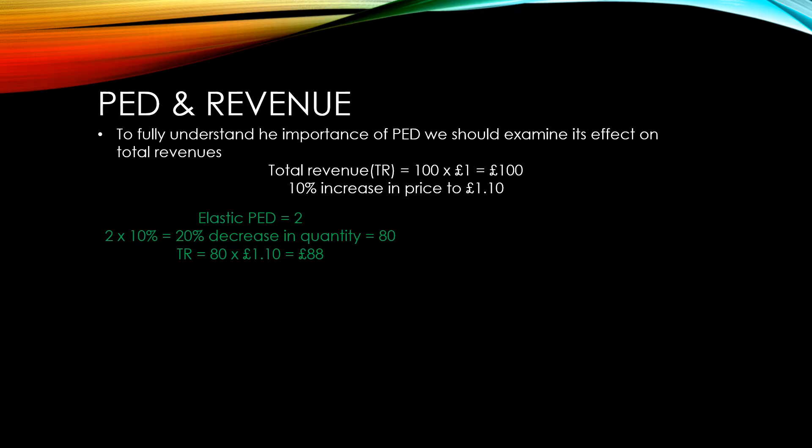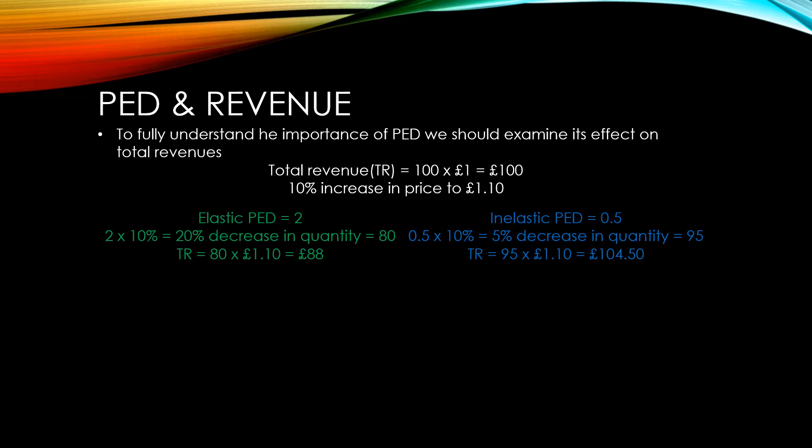However, if our muffins have an inelastic PED of 0.5, then it will be 0.5 times 10%, or a 5% decrease in quantity demanded. If we sell 95 muffins for £1.10, we would actually increase our total revenue from £100 to £104.50.